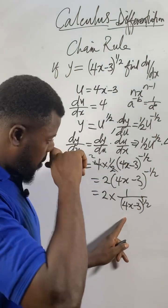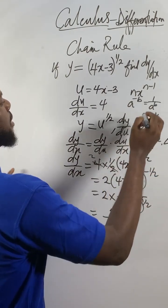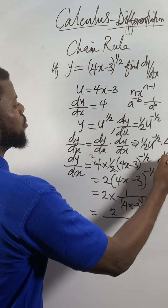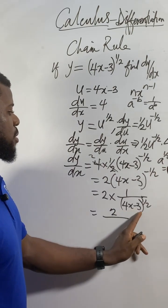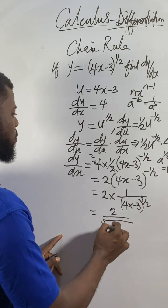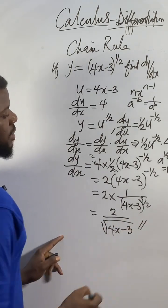Finally, we have 2 over (4x - 3)^(1/2). Remember, a^(1/2) is the same as square root of a. So the final answer is 2/√(4x - 3).